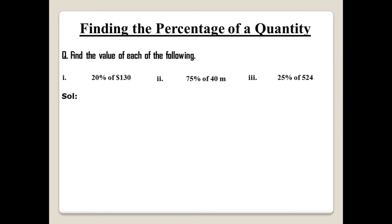Coming to the solution, we will solve the first question: 20 over 100 multiplied by 130 dollars. Here the zero of 20 will be cancelled with a zero of 100, then the zero of 130 will be cancelled with the remaining zero of 10, and then you multiply 2 with 13. Two 13s are 26, so the answer is 26 dollars.